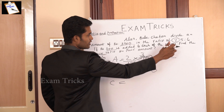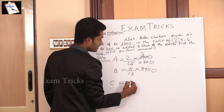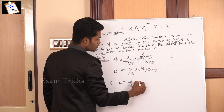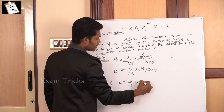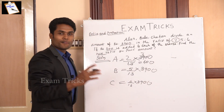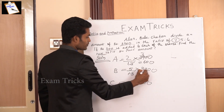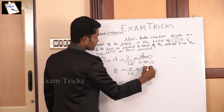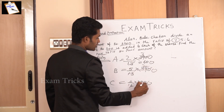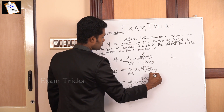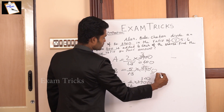Now, B can be 5 by 13 into 3,900, and C can be 6 by 13 into 3,900. So 300 into 5 gives 1,500.